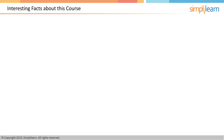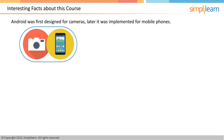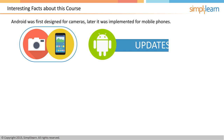Interesting facts about this Android app development course: Android was first designed for cameras. Later, it was implemented for mobile phones. When compared with other operating systems, the Android operating system has been updated an incredible number of times, resulting in a web-based service which is remarkably different than the original version of this mobile operating system. It has unlocked a number of new capabilities.